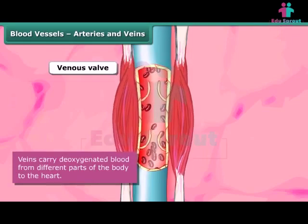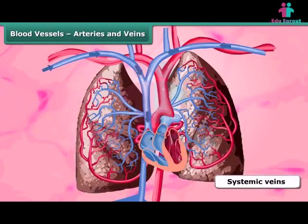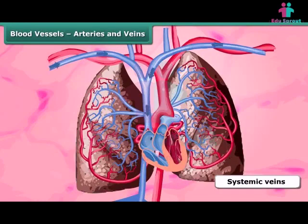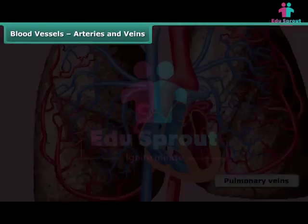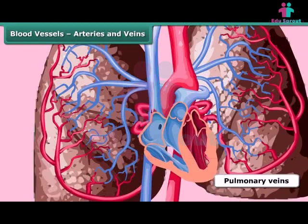Veins are of two types. Systemic veins carry deoxygenated blood from the different body parts to the heart. Pulmonary veins carry oxygenated blood from the lungs to the heart.